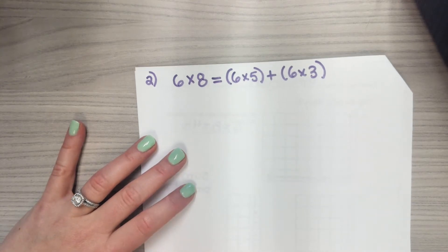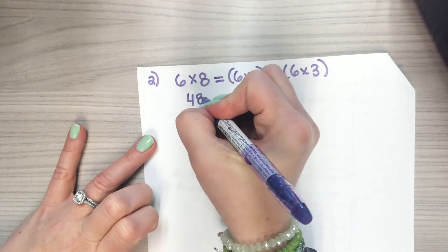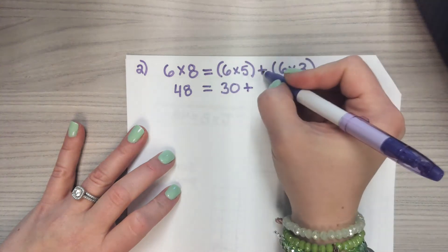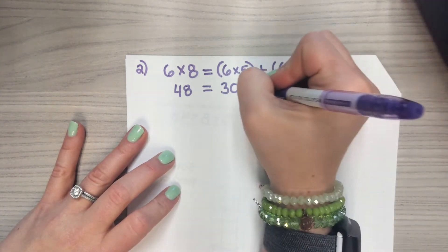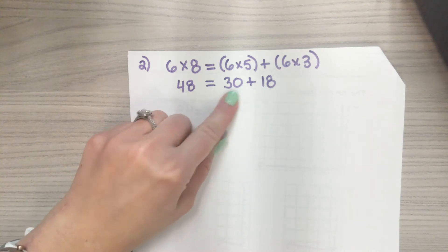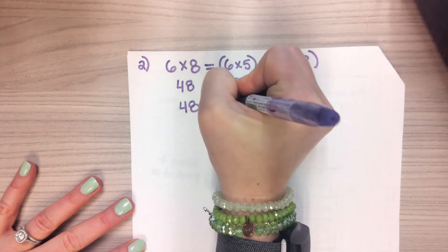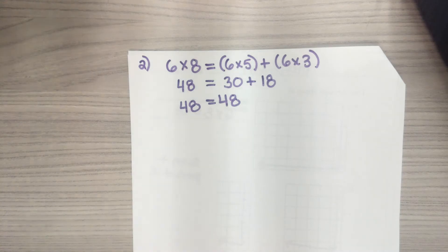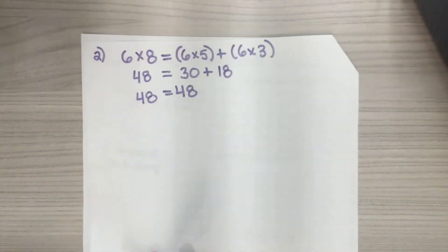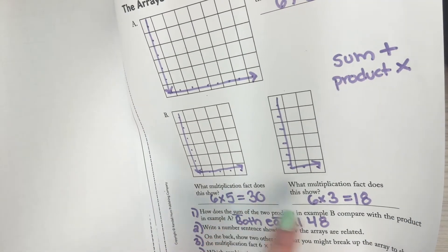So I know that six times eight equals, and I'm going to use parentheses here, equals six times five plus six times three. I know that. I just showed it with my arrays. My next step will be to start to solve this. Well, six times eight is 48. Six times five is 30 plus, six times three is 18. And I have one more line because I still need to add up these guys right here. So then I finally get 48 equals 48. And there we go.